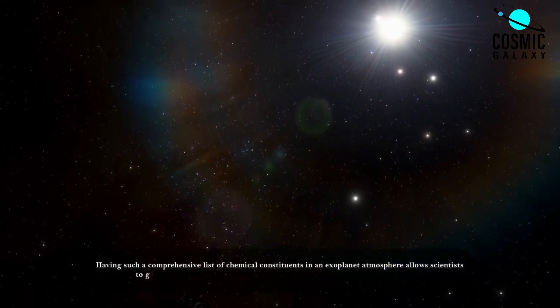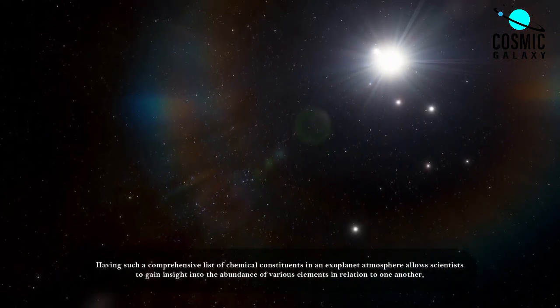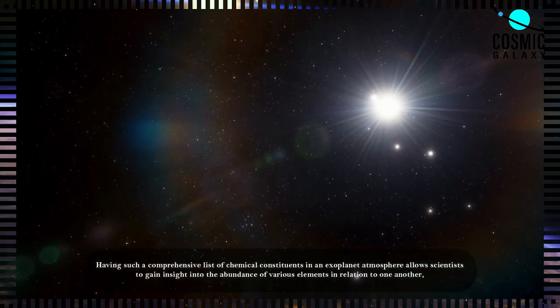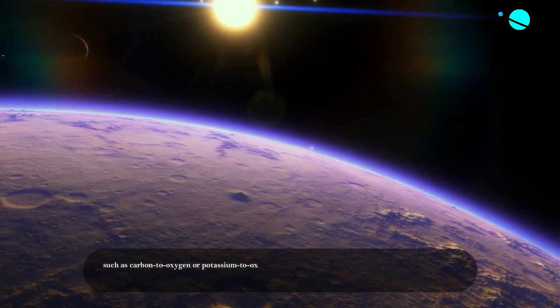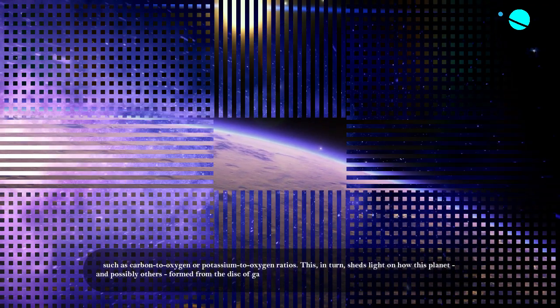Having such a comprehensive list of chemical constituents in an exoplanet atmosphere allows scientists to gain insight into the abundance of various elements in relation to one another, such as carbon-to-oxygen or potassium-to-oxygen ratios.